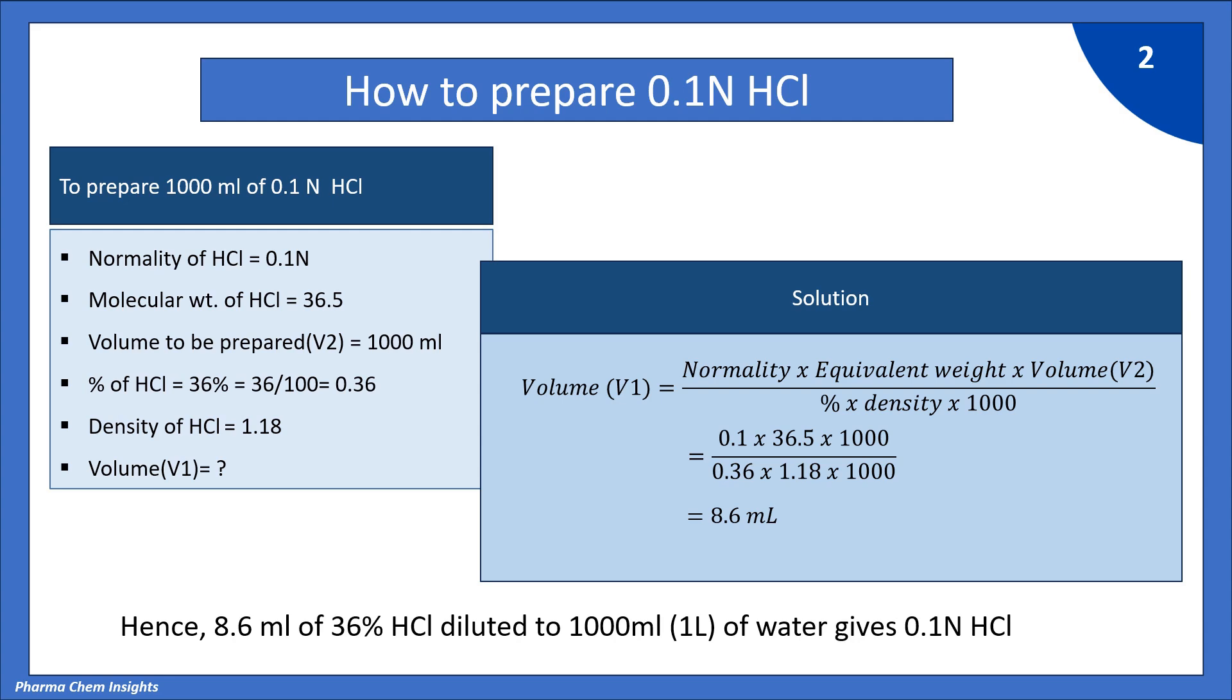Hence 8.6 ml of 36% HCl diluted to 1000 ml, that is 1 litre of water, gives 0.1 normal HCl.